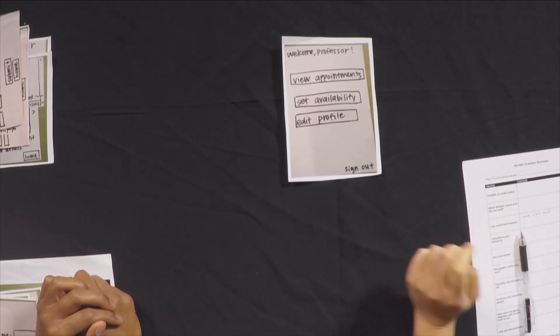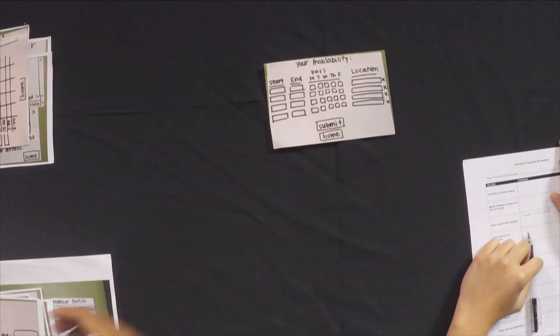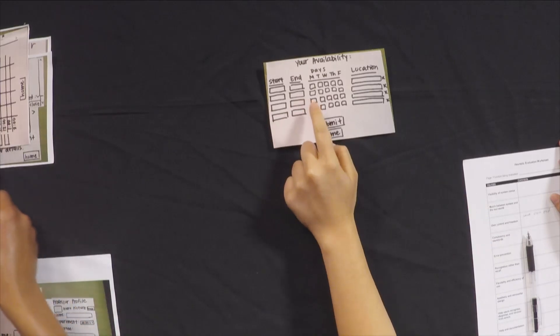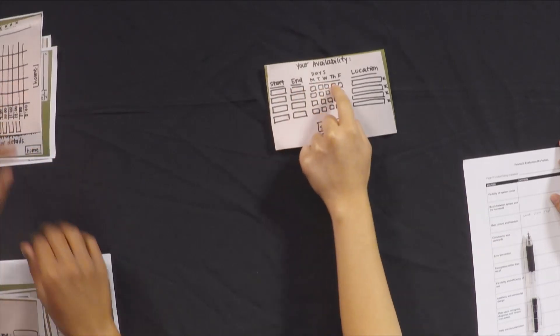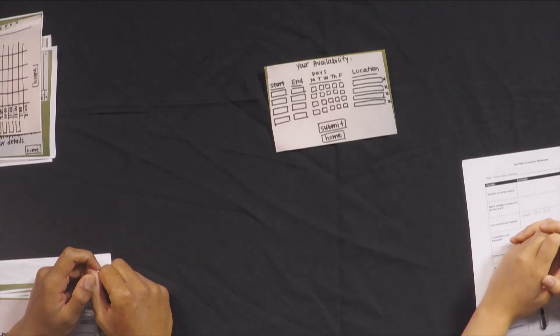And I'm just going to set availability first. Here I see there's start and end times and I can check some days of the week and add a location. I think there are a few problems here.